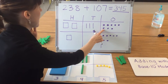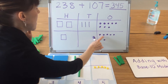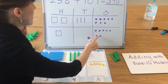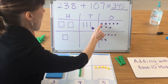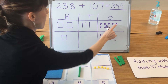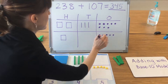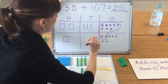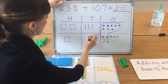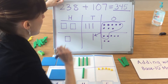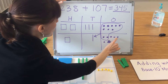I count my ones — I had 8 here: 8, 9, 10, 11, 12, 13, 14, 15 in all. So I need to compose a 10. I circle 10 ones: 1, 2, 3, 4, 5, 6, 7, 8, 9, 10. I circle those to show that they're being grouped together, then draw an arrow into my tens place to show that I'm moving them and forming a new 10. I still have 1, 2, 3, 4, 5 ones.